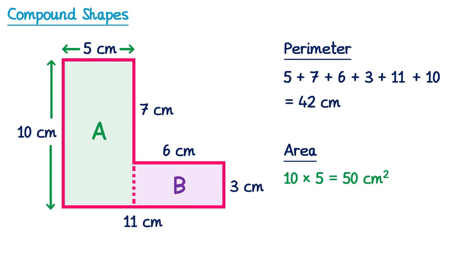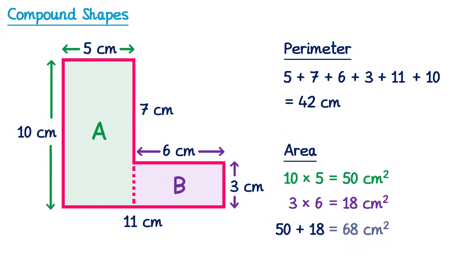For rectangle B the height is 3 and the width is 6, so if we multiply 3 and 6 we get 18 centimeters squared. To find the area of the whole compound shape we just add together the areas of these two rectangles: the area of rectangle A, which was 50, plus the area of rectangle B, which was 18. If you add 50 and 18 you get 68, so the answer for the area is 68 centimeters squared.